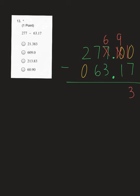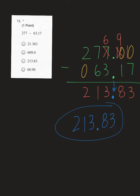Now we have something to borrow from — cross off that 10, make it a 9, and make our final 0 a 10. 10 minus 7 is 3. 9 minus 1 is 8. 6 minus 3 is 3. 7 minus 6 is 1. 2 minus 0 is 2. Final step: drop our decimal straight down to get a final answer of 213.83, which was C on your Microsoft form.